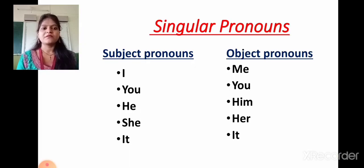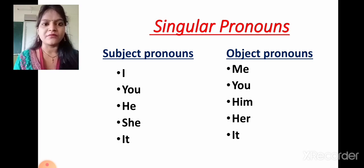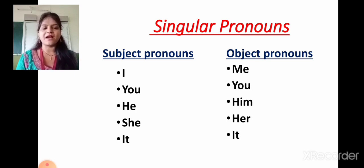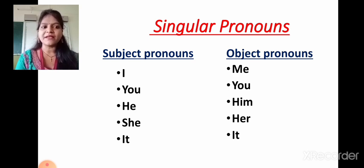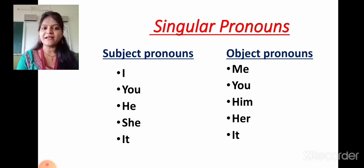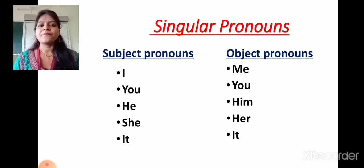There are two types of pronouns. First, singular pronouns. In singular pronouns, there are subject pronouns and object pronouns. I is a subject pronoun. Me is an object pronoun. You is a subject pronoun. You is an object pronoun. He is a subject pronoun. Him is an object pronoun. She is a subject pronoun. Her is an object pronoun. It is both a subject pronoun and an object pronoun. These all are singular pronouns.